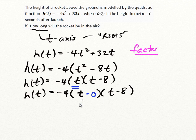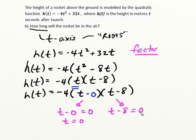Now that we have factored form, we can solve for the roots. When does t minus 0 equal 0? Clearly, that's when t equals 0. And for the other root, when does t minus 8 equal 0? That is true when t equals 8. So the rocket will be in the air for 8 seconds. From our graph we could tell visually that the two roots were 0 and 8. If we didn't have the graph, factoring allows us to pull out the roots and clearly answer: the rocket is in the air for 8 seconds.